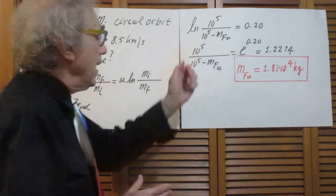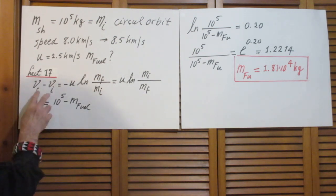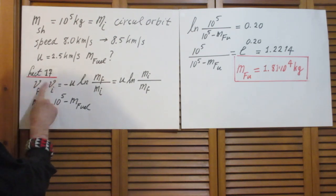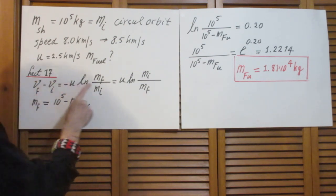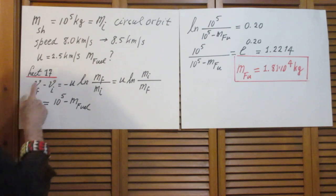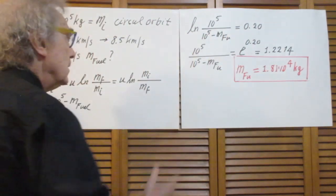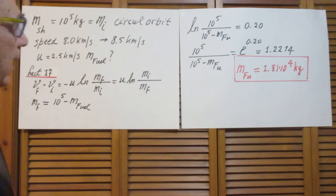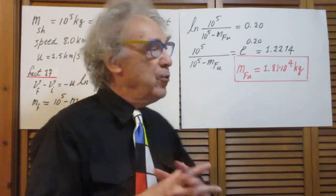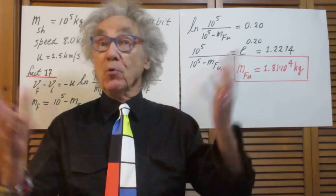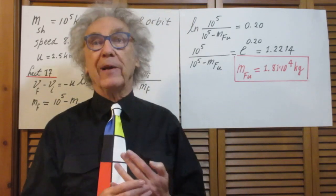So, simple algebra. This difference is half a kilometer per second. U is two and a half kilometers per second. That ratio is 0.20. And the rest is trivial. So the total mass of the fuel that has been thrown out is 1.8 times 10 to the fourth kilograms.